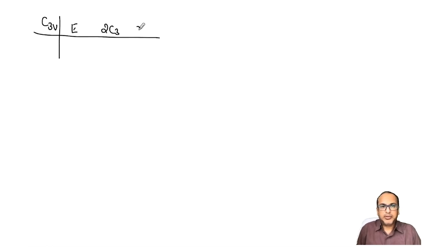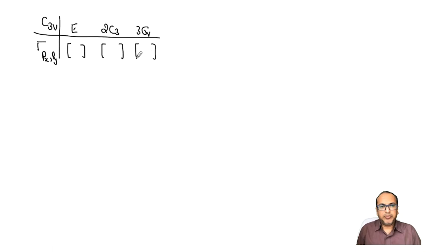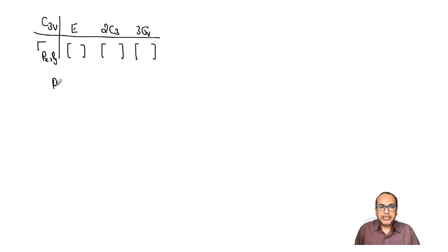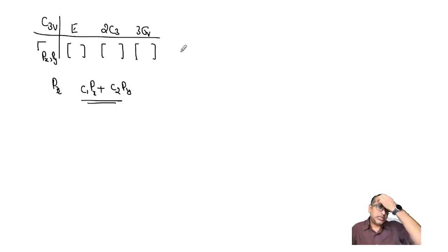In the previous lecture we looked at developing the representation using wave functions as the basis for the C3v point group. For C3v, when we took wave functions px and py as basis, what we got is a two-by-two matrix for all three symmetry operations, and that was an irreducible representation. So although we started with px as the basis, we ended up getting a representation which is a linear combination of px and py.